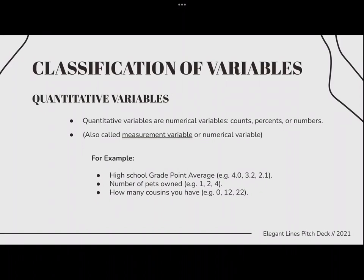Next we have quantitative variables, which are numerical variables — counts, percents, or numbers. This is also called a measurement variable or numerical variable. For example, high school grade point average, such as 4.0, 3.2, and 2.1. Also number of pets owned, for example 4, 2, or 1. And how many cousins you have, such as 12, 22, or 0.